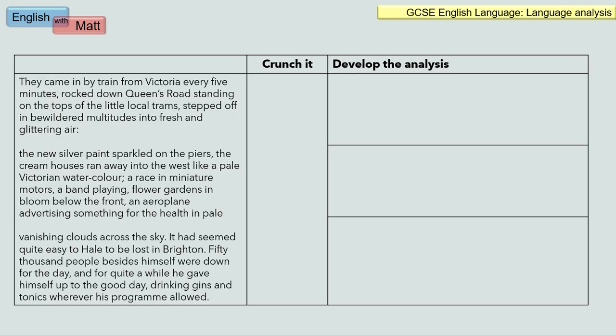Here we have the Brighton Rock extract: 'They came in by train from Victoria every five minutes. Rock down Queens Road, standing on the tops of the little local trams, stepped off in bewildered multitudes into fresh and glittering air. The new silver paint sparkled on the piers. The cream houses ran away into the west like a pale Victorian watercolour. A race of miniature motors, a band playing, flower gardens in bloom below the front, the airplane advertising something for the health in pale vanishing clouds across the sky. It had seemed quite easy to be lost in Brighton. 50,000 people besides himself were down for the day. And for quite a while he gave himself up to the good day, drinking gins and tonics wherever his program allowed.' If you remember from the AQA Brighton Rock extract, that is the bit for language analysis — question two, paper one. What I've done is split that into three little paragraphs.